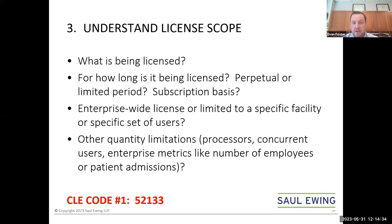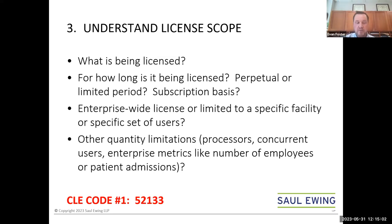Finally, consider any other quantity limitations, such as the number of processors, the number of users, or metrics like number of employees, admissions, or students — all of these can be potential limitations or measures of license scope. Understanding all of these things in your environment is really important when you set out to do one of these agreements.